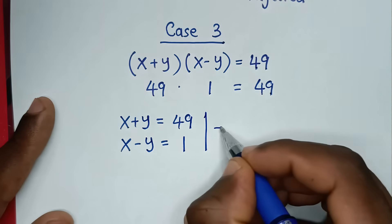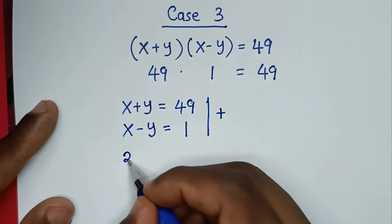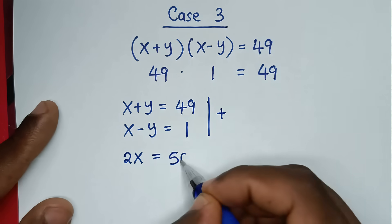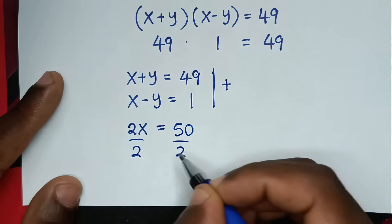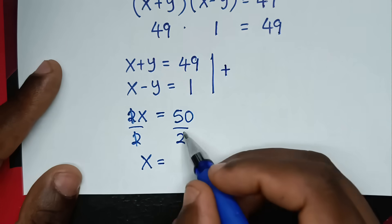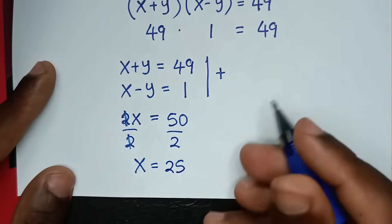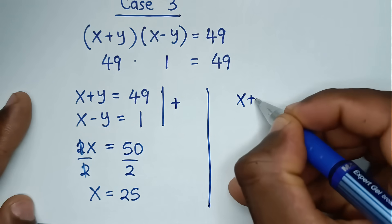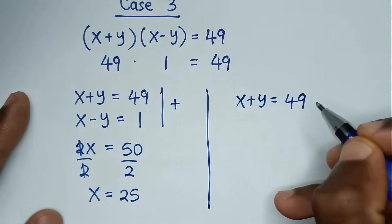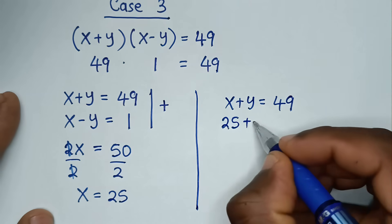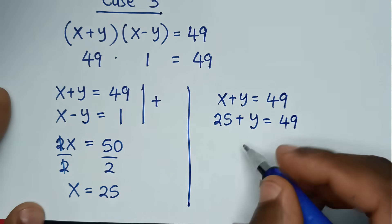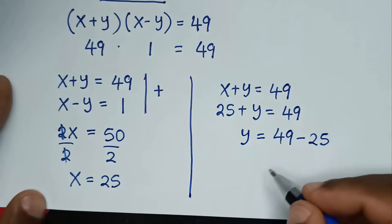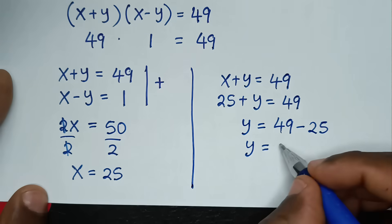We add the two equations: 2x = 49 + 1 = 50, so x = 25. Using the first equation x + y = 49 and substituting x = 25, we get 25 + y = 49, so y = 49 - 25 = 24.